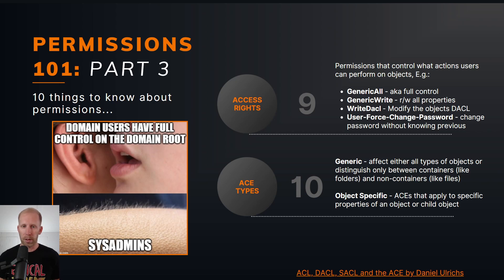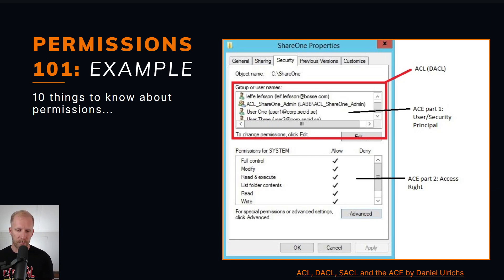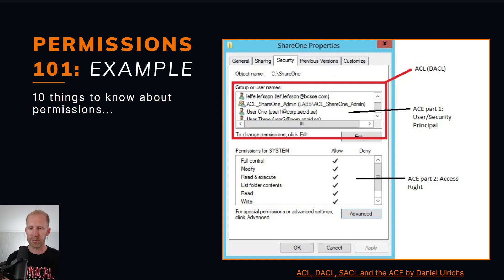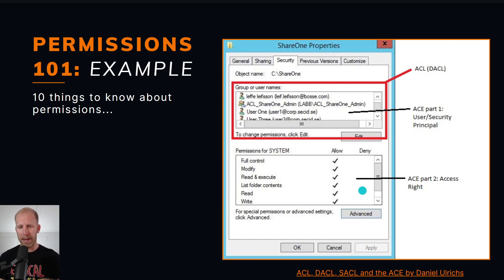Here's an example from an article by Daniel Alrich which is a great overview of these permissions - I've linked it in the slides. You can see the ACLs and DACLs at the top and the individual ACEs. When you click Advanced in Active Directory you get to see those ACEs in a more fine-grained way, including inheritance details.